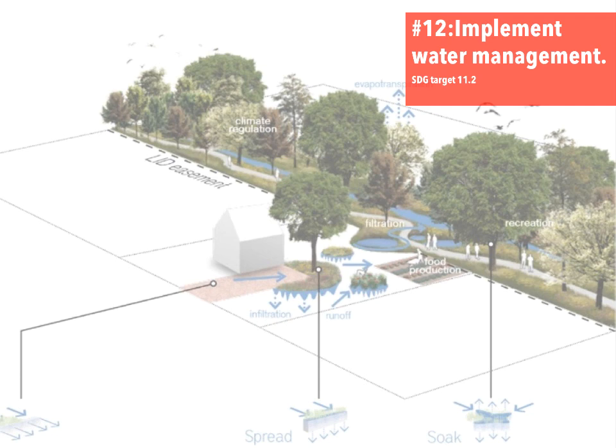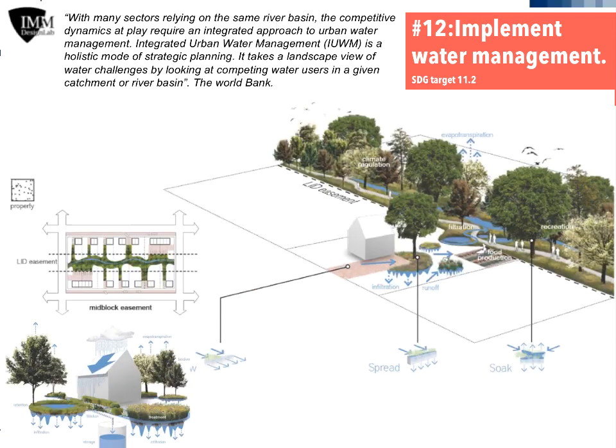DOP No. 12, Implement Water Management, is correlated with the SDG target 11.2. Hence, the main aim of this ordering principle is to promote integrated urban water management for managing urban water systems, bringing together water, waste, and stormwater, and adopting a multipurpose strategy for the five types of water available in urban areas: groundwater, surface water, drinking water, stormwater, and wastewater, ensuring access to water and sanitation infrastructure and services.